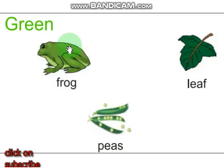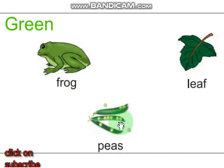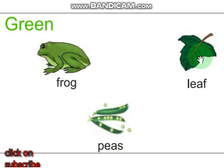Green. The frog is green. The leaf is green. And the peas are green. Frog is green, leaf is green, and peas are green.